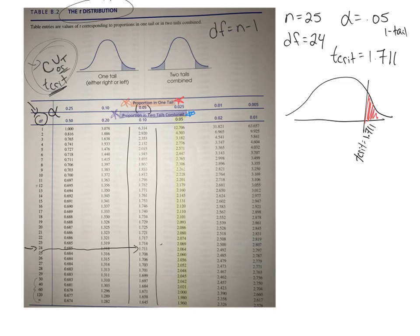If my t obtained falls somewhere over here in this critical region, I can reject the null. But if my t obtained falls outside the critical region, somewhere over here, over here, or even in one tail test, way over here, I would still fail to reject that null. Okay?